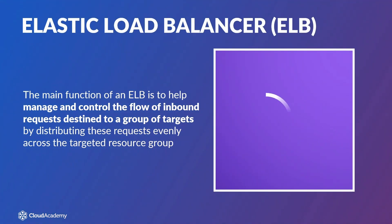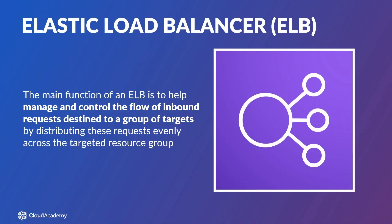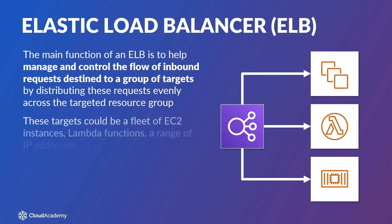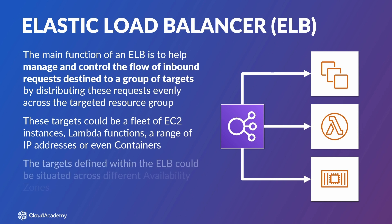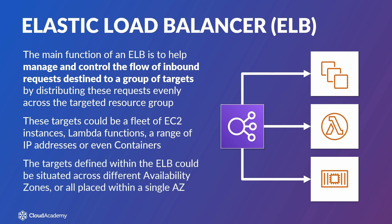The main function of an Elastic Load Balancer, commonly referred to as an ELB, is to help manage and control the flow of inbound requests destined to a group of targets by distributing these requests evenly across the targeted resource group. These targets could be a fleet of EC2 instances, Lambda functions, a range of IP addresses or even containers. The targets defined within the ELB could be situated across different availability zones for additional resiliency or all placed within a single availability zone.